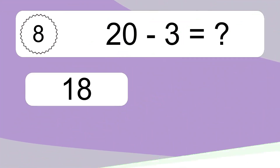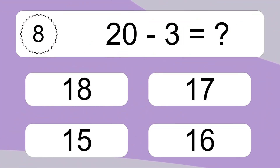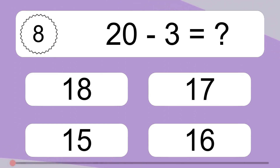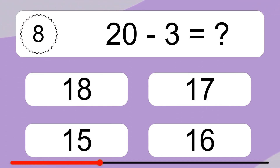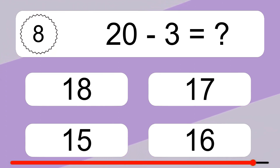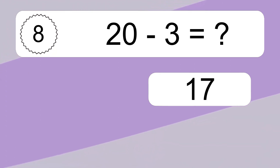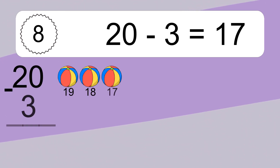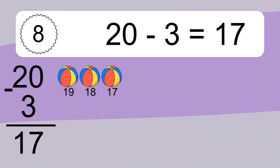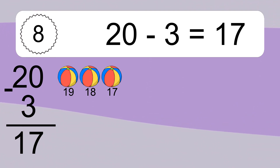20 minus 3 equals what? 20 minus 3 equals 17. Let's count it: 19, 18, 17.